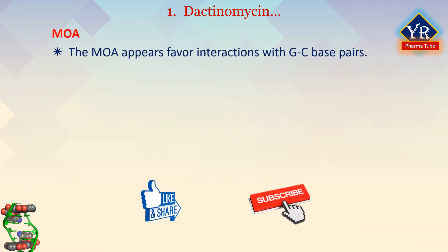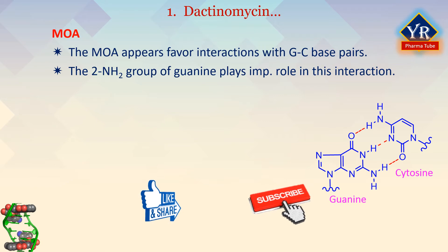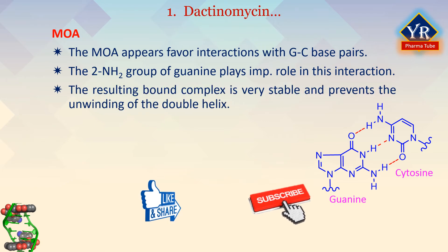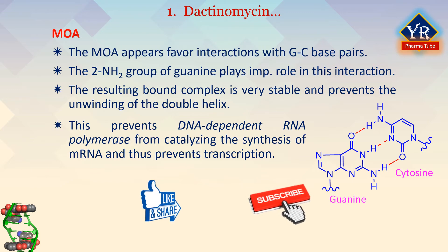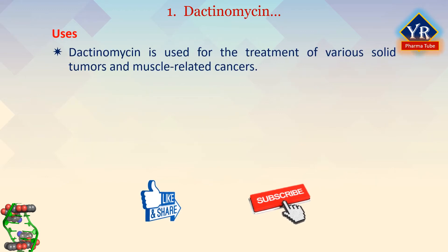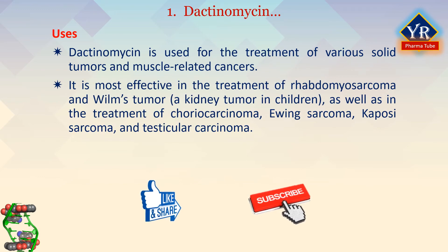The mechanism of action appears to favor interactions with guanine-cytosine base pairs, in particular between two adjacent guanine bases on alternate strands of the helix. The molecule is further held in position by hydrogen bond interactions between nucleic acid bases of DNA and the cyclic pentapeptides positioned on the outside of the helix. The resulting bound complex is very stable and prevents the unwinding of the double helix, which in turn prevents DNA-dependent RNA polymerase from catalyzing the synthesis of messenger RNA, thus preventing transcription. Dactinomycin is most effective in the treatment of rhabdomyosarcoma and Wilms tumor, a kidney tumor in children, as well as choriocarcinoma, Ewing sarcoma, Kaposi sarcoma, and testicular carcinoma.